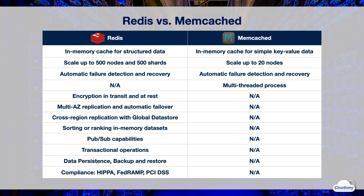Both Redis and Memcached are highly scalable. ElastiCache for Redis can scale up to 500 nodes and 500 shards. ElastiCache for Memcached can scale up to 20 nodes. Both Redis and Memcached can automatically detect and recover from node failures. Memcached can run large nodes with multiple threads, whereas Redis only supports single-threaded processes.